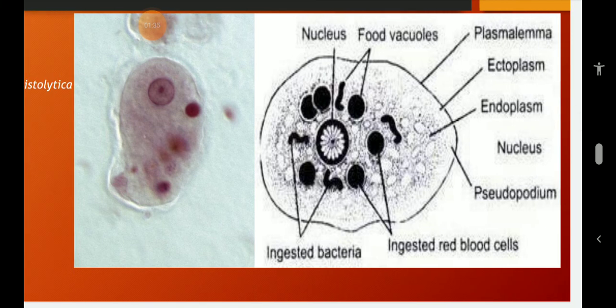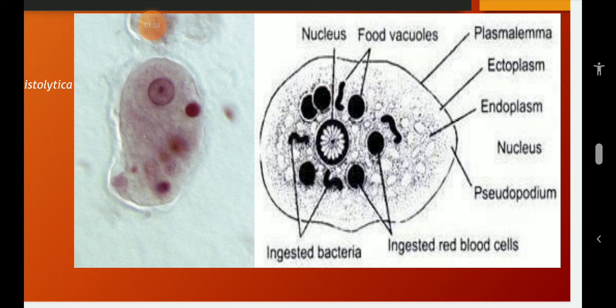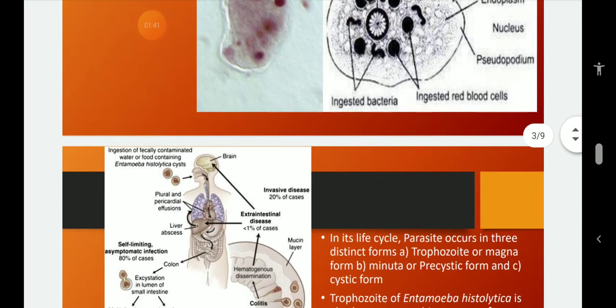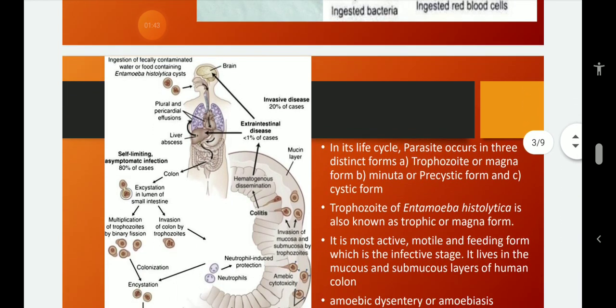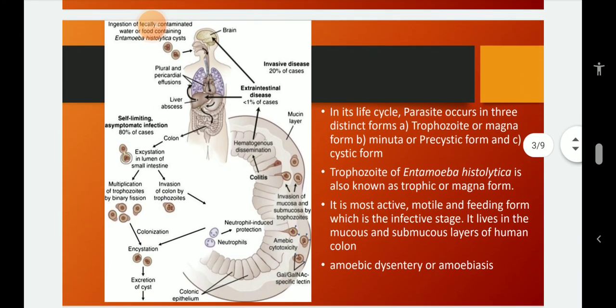It causes a disease called as amoebic dysentery or it is also called as amoebiasis. It is a microscopic endoparasite found in intestine of man and it is cosmopolitan in distribution. It is present all over the world, but more common in tropical and subtropical regions of the world, including India.